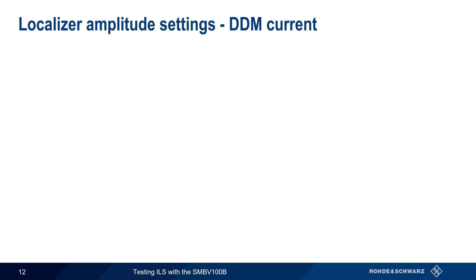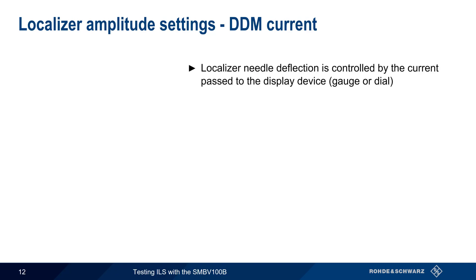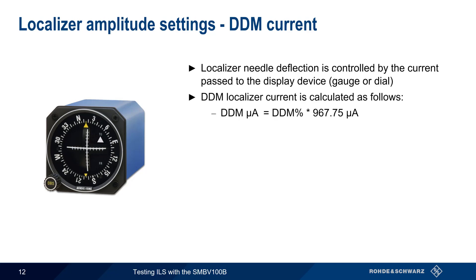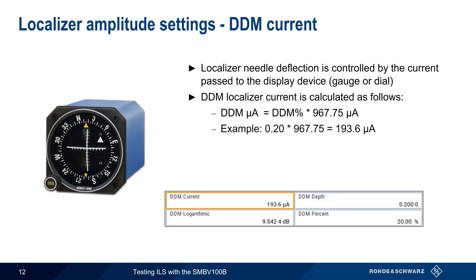One additional way that DDM can be expressed is in terms of current. The deflection of the localizer needle is controlled by the current passed to the display device – that is, the gauge or dial – and this current is a function of the measured DDM. For localizers, the current is calculated using the formula: DDM microamps equals DDM percent times 967.75 microamps. For example, if DDM is 0.2, then the corresponding DDM current would be 193.6 microamps. Changing the current changes the DDM, and vice versa.